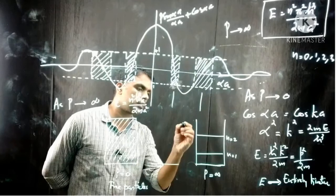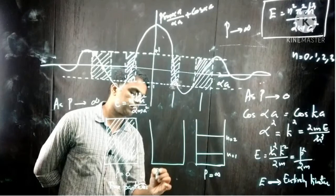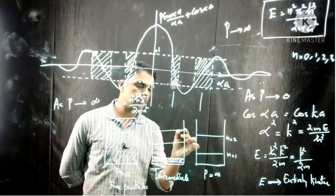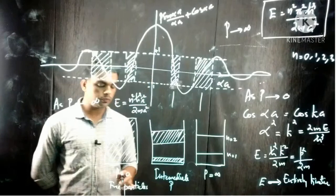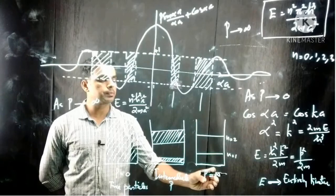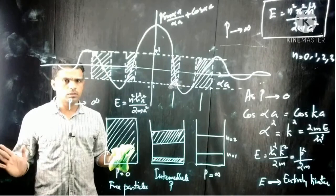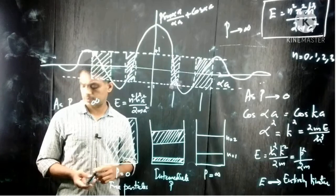For an intermediate value of P, the energy bands have finite widths separated by finite band gaps. This illustrates the effect of P on electrons in the periodic potential. We stop here and will continue the discussion in the next class.